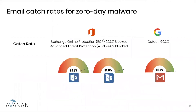For email catch rates, we saw that Google outperformed with a 99.2% catch rate, as opposed to EOP — the default Office 365 email security — which caught 92.3%. If you have the additional ATP capability, it catches 94.8%, so you get a 2.5% add-on. When it comes to user experience, the most important difference between EOP and Advanced Threat Protection is probably the delay caused by the sandboxing rather than the catch rate improvement itself.